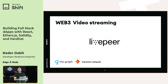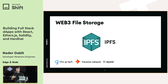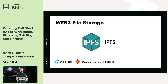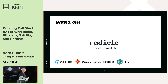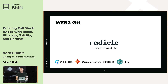For video streaming, Livepeer is an example — if you want to build something like Twitch, you can do that using decentralized protocols with Livepeer. IPFS is a very popular and widely used file storage protocol, and a lot of NFT data is stored in IPFS. For decentralized Git, Radicle is a decentralized Git protocol — the idea is that if the project succeeds, it doesn't go down the way centralized Git can.